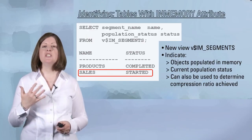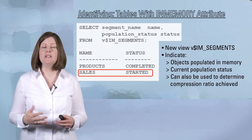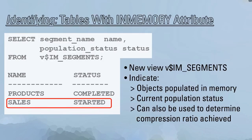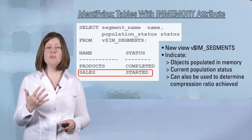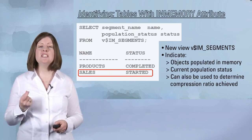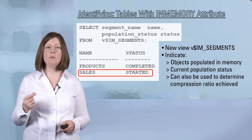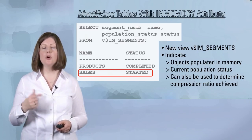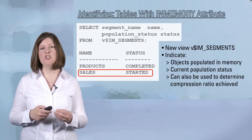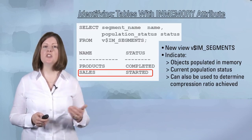How do I know if an object has been populated into the column store or is being populated? You can see that by looking in a new V$ view called V$IM_SEGMENTS. It has a status column that will tell you whether the object has completed population and is in the column store, or if population has started. Objects with a started status are in the middle of population right now. There is an additional column called BYTES_NOT_POPULATED that indicates how much more of that object is left to be populated. Once that column reaches zero, the status will change from started to completed.